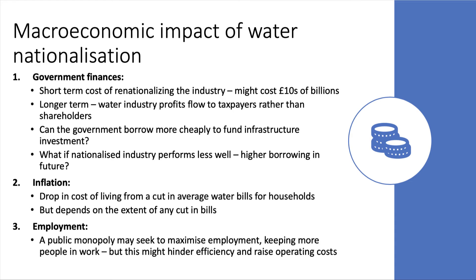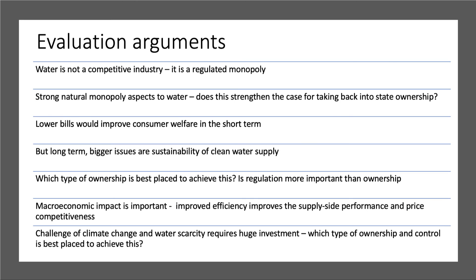Synopticity is all about finding those micro and macro aspects to discuss. For evaluation: water is not a competitive industry — it's not close to contestability. You might try to bring some competition in terms of water supplies to businesses, but it's essentially a regulated monopoly, so it won't be a contestable sector. The fundamental question is who should own it and who should run it. There are strong natural monopoly aspects — think about the diagram you would draw for a natural monopoly. Does this strengthen the case for taking it back into state ownership?